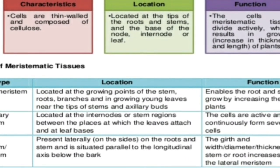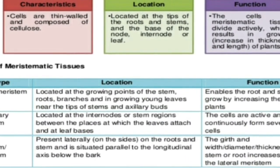The meristematic tissue has been divided into three categories. The apical meristem, which is present at the apex — at the shoot tip, root tip, or branch tip. They are located at the growing tip of the stem, root, branches, and young leaves. Their function is to increase the length of the plant.